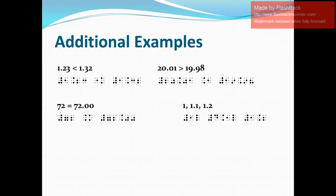Our second example: 20.01 is greater than 19.98. In Nemeth, we write the numeric indicator, digits 2 and 0, decimal point, digits 0 and 1, space, the greater-than symbol in Nemeth, space, numeric indicator, digits 1 and 9, decimal point, and digits 9 and 8.